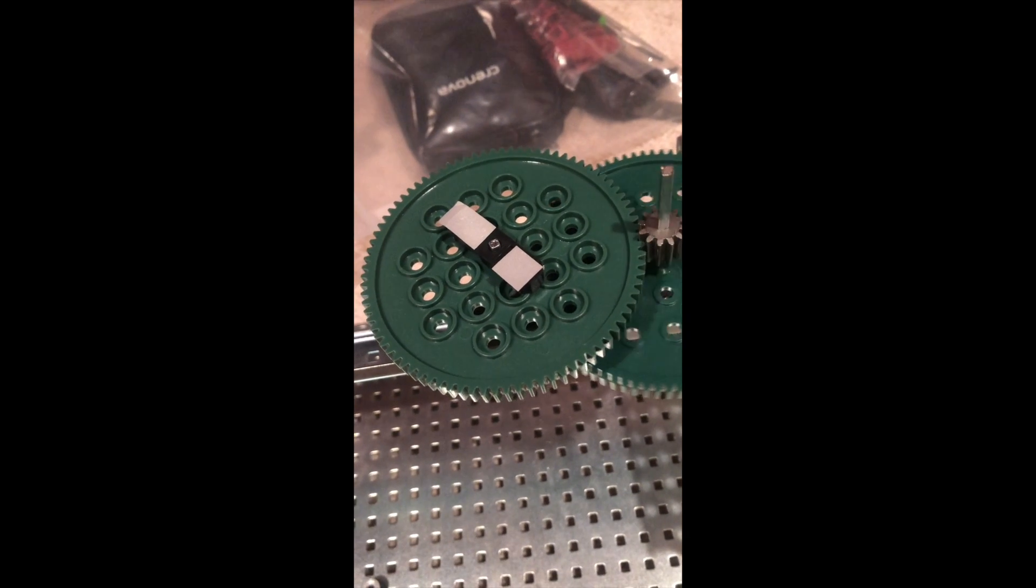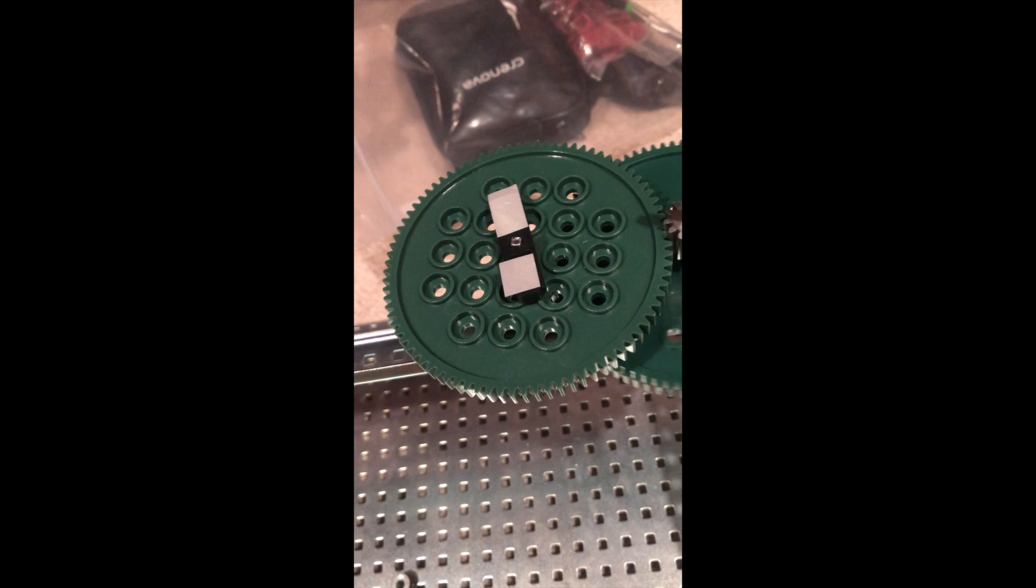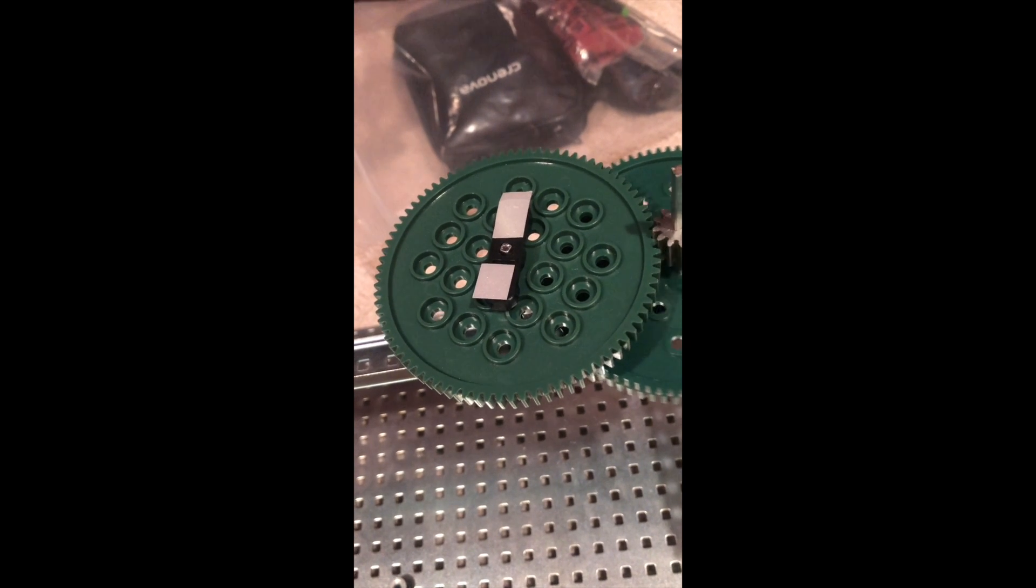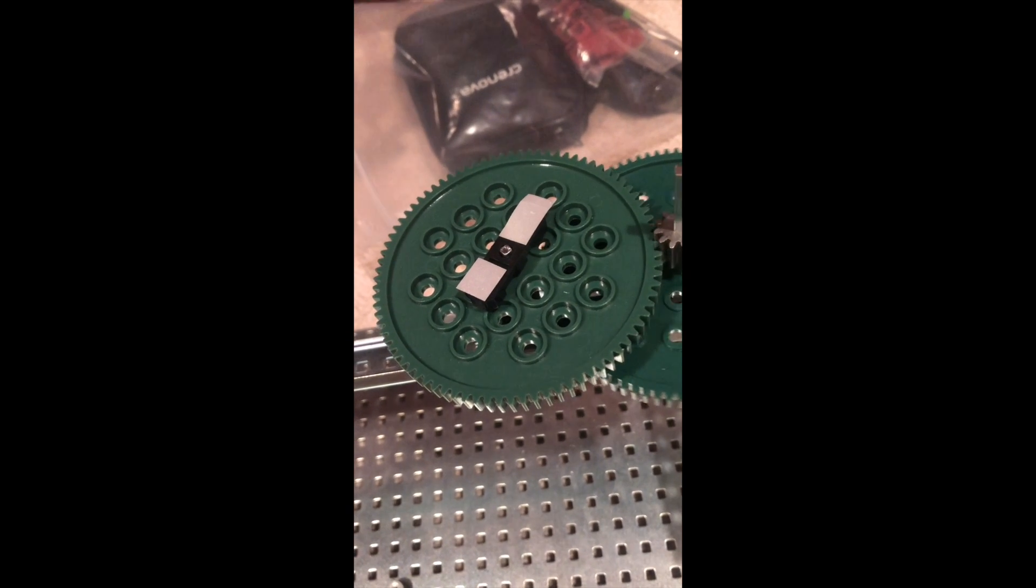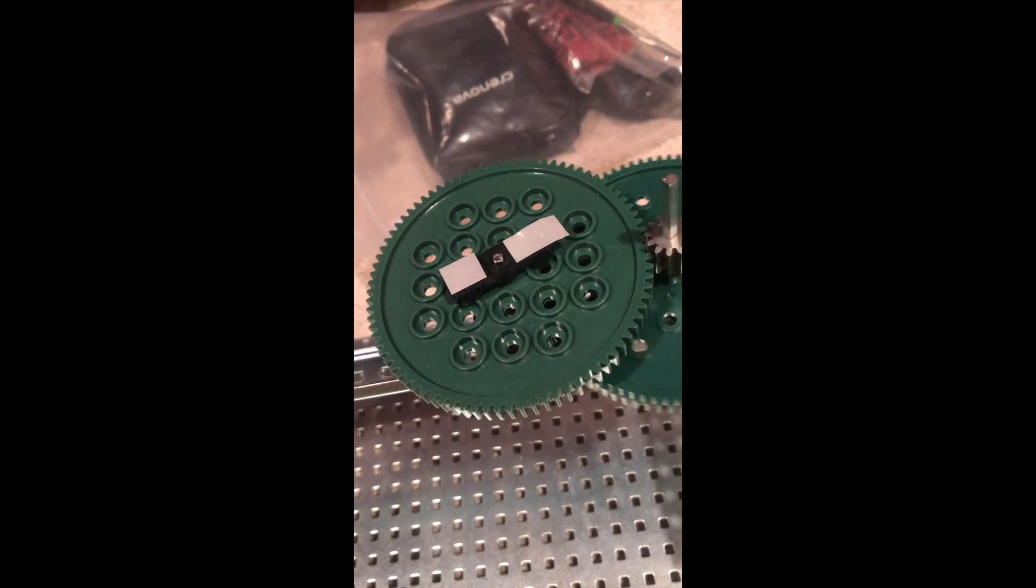As you can see, the output speed of that final gear is so slow that we won't be able to measure it with the tachometer. But our calculations show that it comes out to be around 2 RPM.